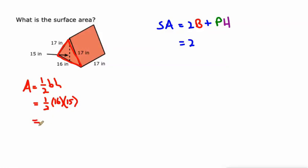120 square inches for the area of the base. The perimeter of the base is the sum of all sides, so we have the 16 and then the 17 and the 17.